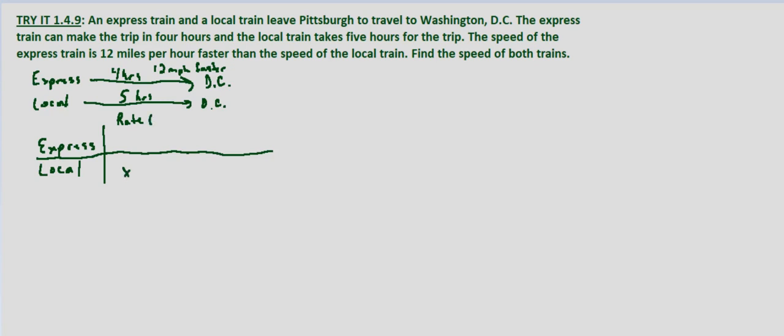This is in miles per hour. So what's the rate of the express train? Well it's 12 miles per hour faster, so the rate of the local train plus 12. We also know the amount of time that it takes. So let's look at how long does it take the express train? We know it takes four hours. And how long does it take the local train? We know that that takes five hours.